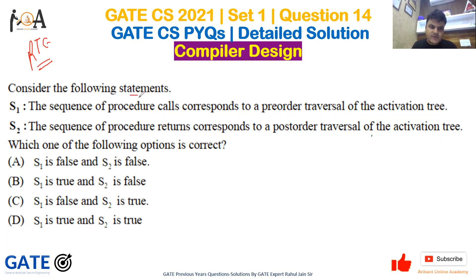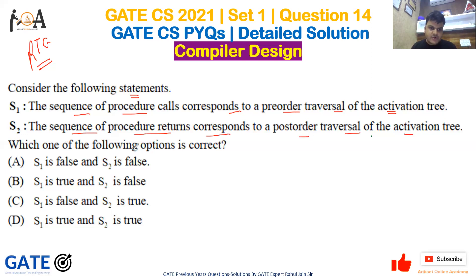Consider the following statements. Statement one: the sequence of procedure calls corresponds to a pre-order traversal of the activation tree. Statement two: the sequence of procedure returns corresponds to a post-order traversal of the activation tree. Which one of the following options is correct? Statement one says procedure calls correspond to pre-order traversal of the activation tree — is it true?